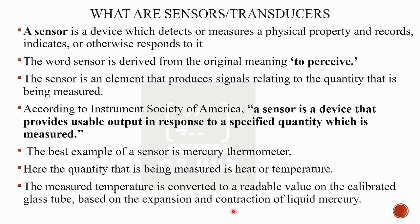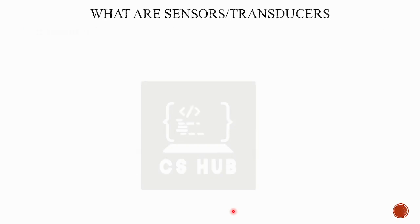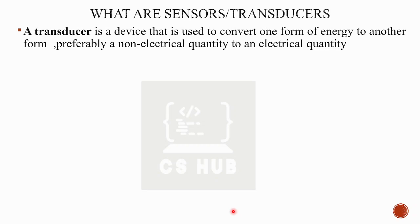Now, what is a transducer? When we say sensor, actuator, and electronic devices collectively, we call them transducers. For example, audio-video devices, microphone, speaker — these are transducers. A transducer is a device that is used to convert one form of energy to another form — preferably a non-electrical quantity to an electrical quantity.